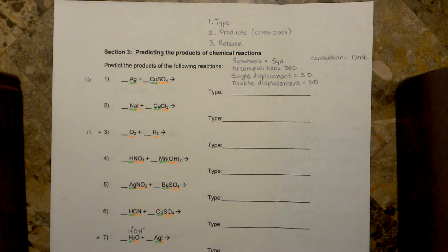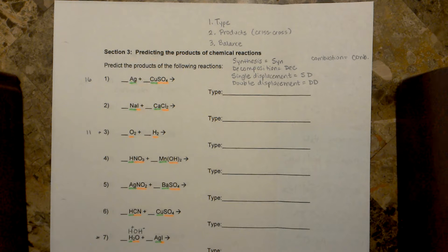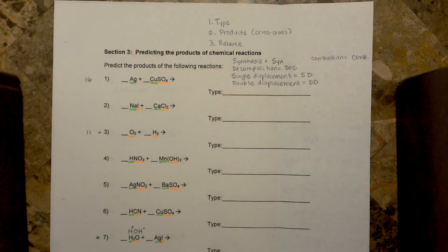This video is focusing on how to predict the products of chemical reactions. In order to predict the products of chemical reactions, the first thing you need to know is what the type of reaction is, and that's going to help you tremendously in figuring out what the products will be.